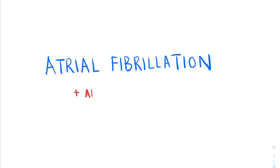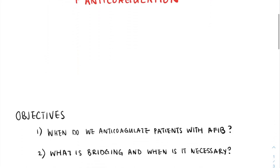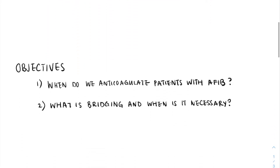Many of our patients admitted to internal medicine either have a history of atrial fibrillation or develop atrial fibrillation while admitted to hospital. When we consider these patients, we should always be thinking about their risk of stroke and subsequently consider their need for anticoagulation, and that's going to be the subject of today's talk. The first objective will be to discuss when we actually have to anticoagulate our patients with atrial fibrillation, and secondly, we'll discuss what bridging is and when this might be required.